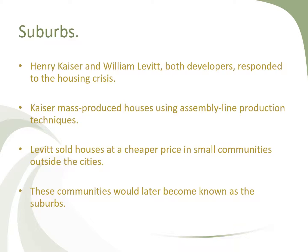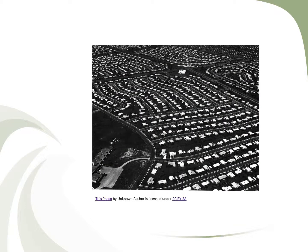Kaiser mass produced houses using assembly line production techniques, which made houses cheaper to own and buy. Levitt sold houses at a cheaper price in small communities outside the cities. One of the first ones was Levittown. These communities would later become known as the suburbs, places located outside of major metropolitan areas.